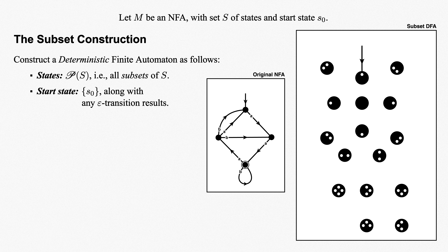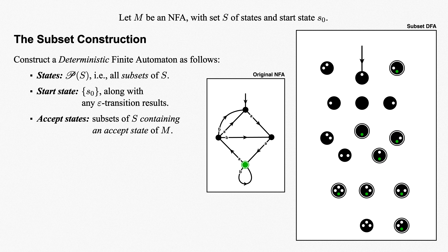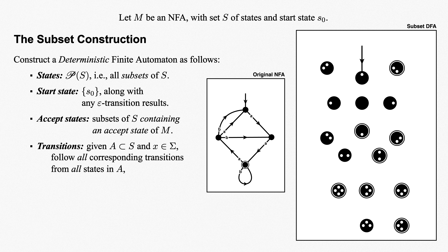Each state of our new DFA contains some subset of the states of our original NFA. We declare any such subset containing an accept state of our original NFA as an accept state for our new DFA. This corresponds precisely to having a branch of our NFA computation that finishes on an accept state. Finally, we come to the transitions — exactly one for each symbol of sigma for each state of our new DFA. Given a state of our new DFA, which is to say a set of states from our original NFA, and a symbol from sigma, we simply observe what our original NFA does to this set, follow all transitions from all branches, and then process any epsilon transitions. Whatever set of states results gives us the unique destination for the transition. Starting with the start state.